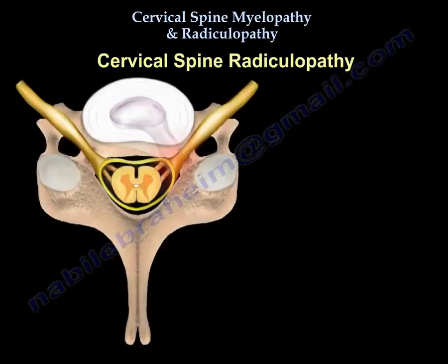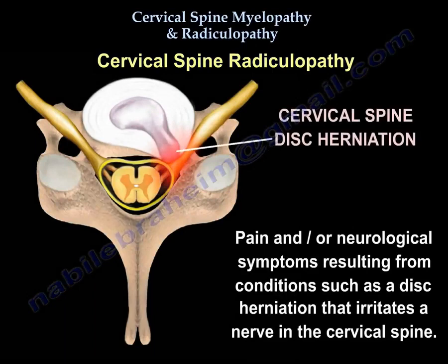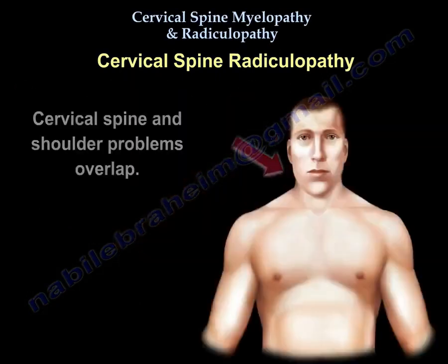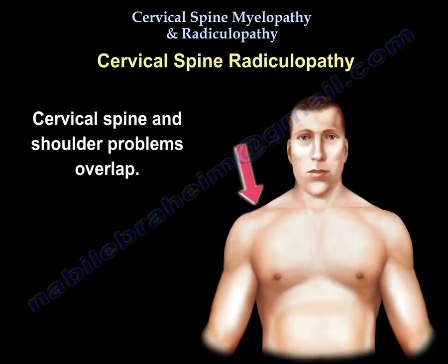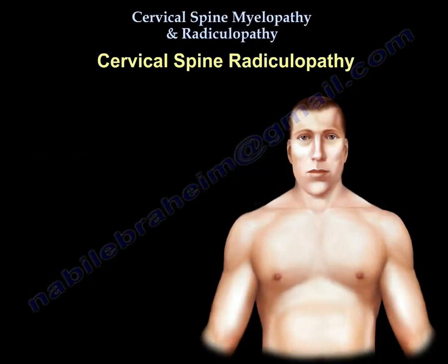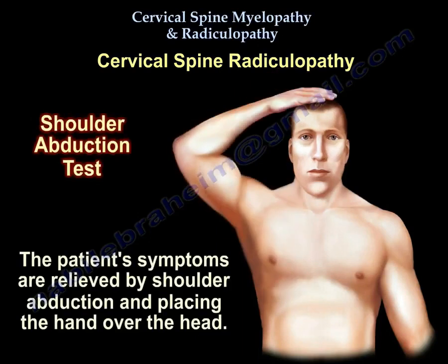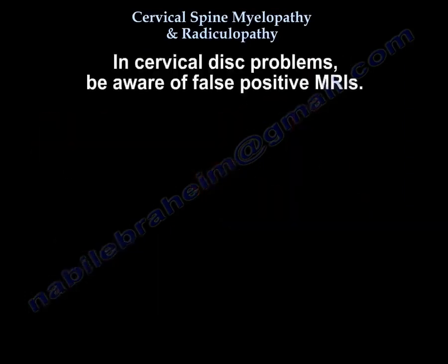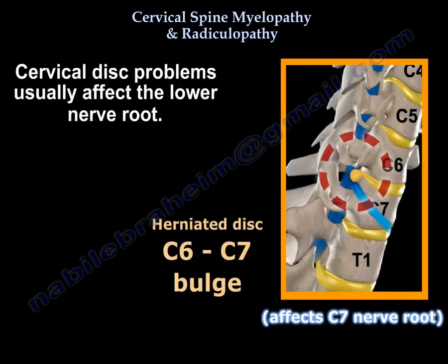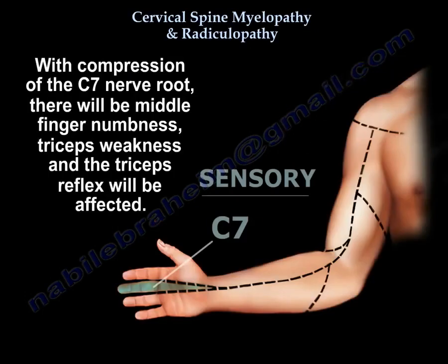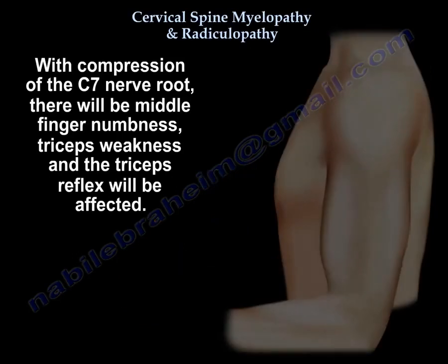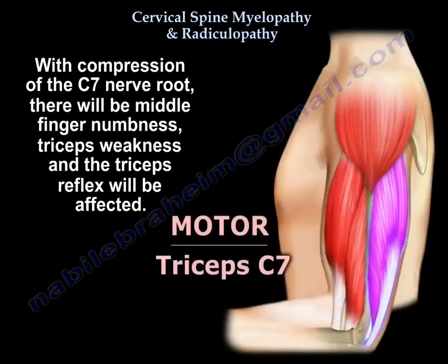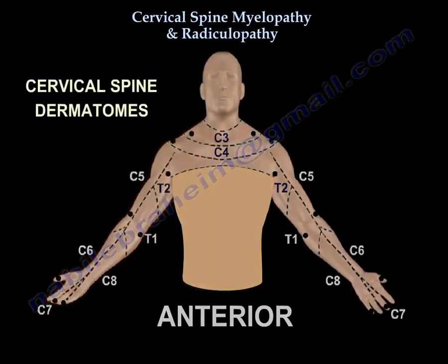Now let's go to cervical radiculopathy. The cervical spine and shoulder problems overlap. You know the condition is of cervical etiology if relief of pain occurs with shoulder abduction by placing the hand over the head. In cervical disc problems, be aware of false positive MRIs. It usually involves the lower-numbered root. So if you have a C6-C7 disc, you will get the C7 nerve root — middle finger numbness, triceps weakness, and the triceps reflex will be affected.